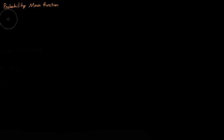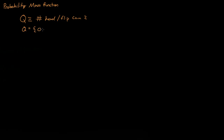Let's say we have some variable q, and what q is defined as is the number of heads we get if we flip a coin two times. So then q can be either zero — you can flip a coin twice and get zero heads — one, flip it twice and get one head, or flip it twice and get heads both times.